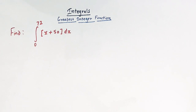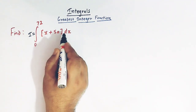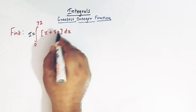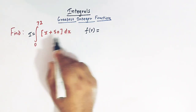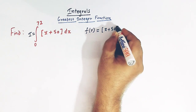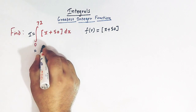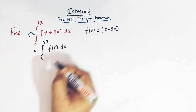Let us see how we can solve this integral. We will make use of an important property of greatest integer function. So let us first call this integral as I. We have this integrand and let us take f(x) equal to greatest integer of x plus 50. So we have this integral from 0 to 72 of f(x) dx.